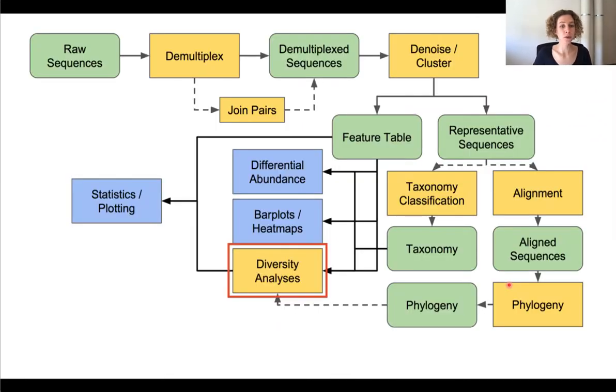So first I'm going to give a quick overview to get us oriented. This is the overall QIIME2 workflow. So far you have probably imported data, if necessary you have demultiplexed it, and the last thing you probably did was denoising and clustering. So you end up with representative sequences and the feature table.